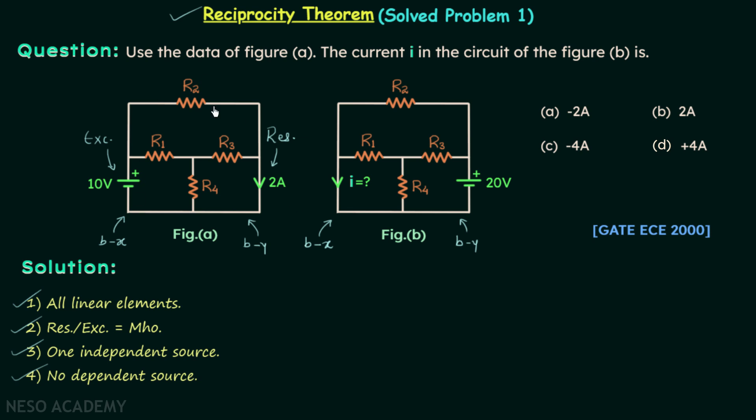We will first focus on network A. We will find out the ratio of response to excitation. In this case it is equal to 2 over 10.